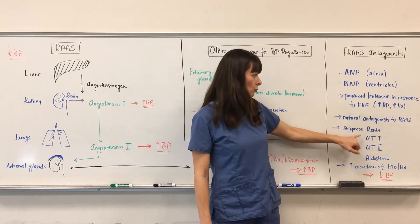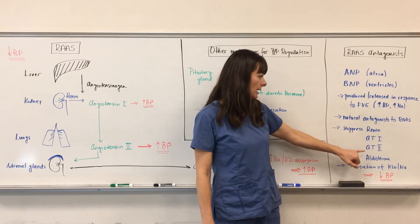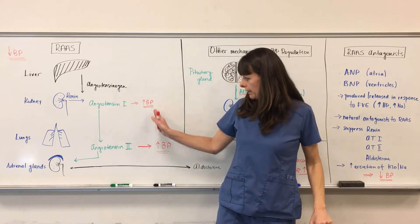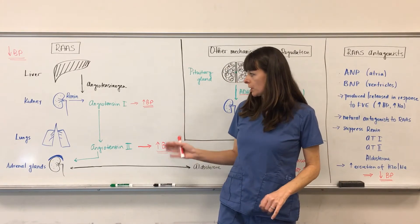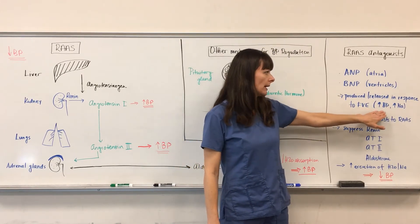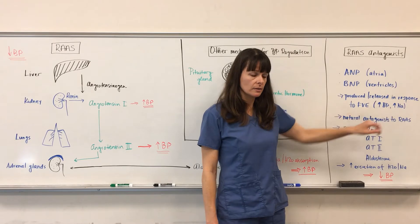So if the blood pressure is too high and the sodium is high, these hormones will be released and will suppress renin, angiotensin 1, angiotensin 2, and aldosterone. So this whole mechanism of increasing blood pressure here is basically negated because we already have too much volume and too high of a blood pressure in our system.